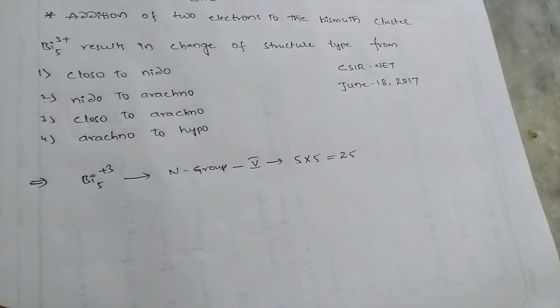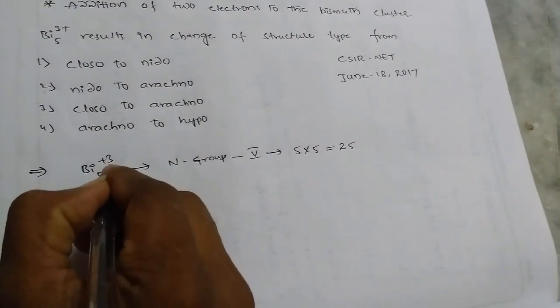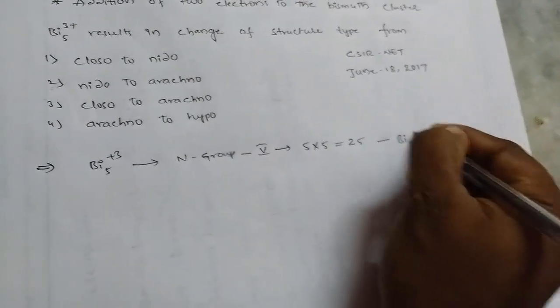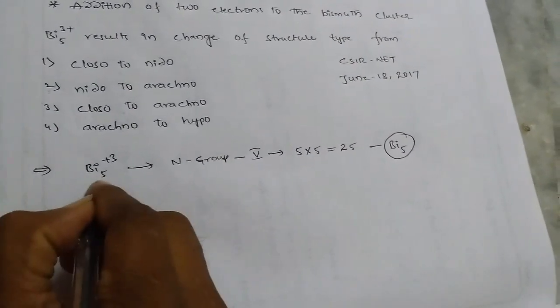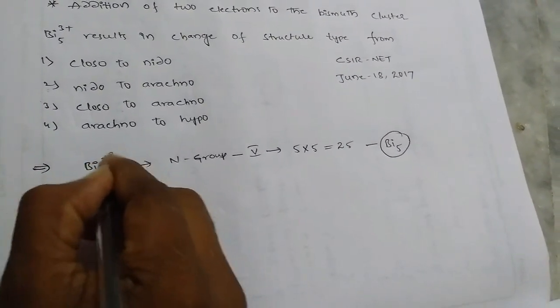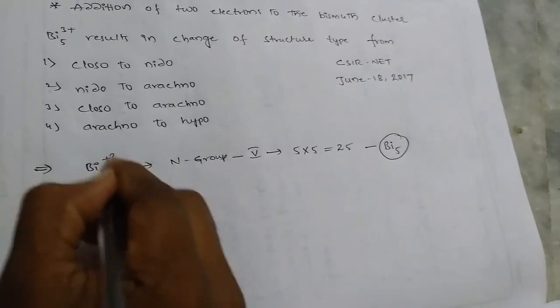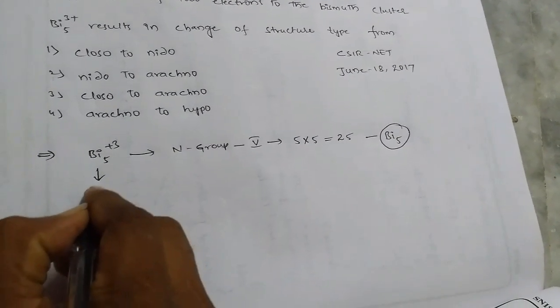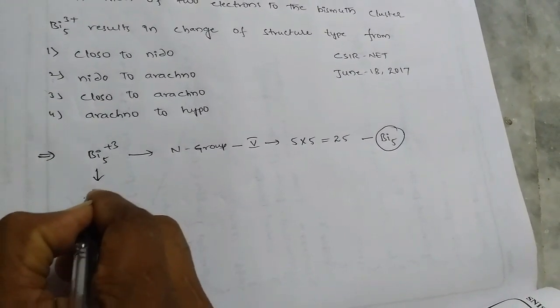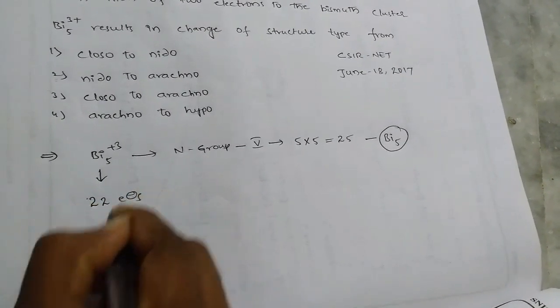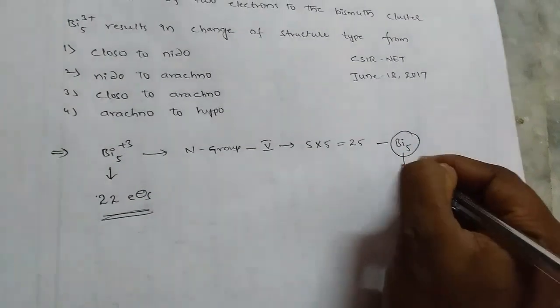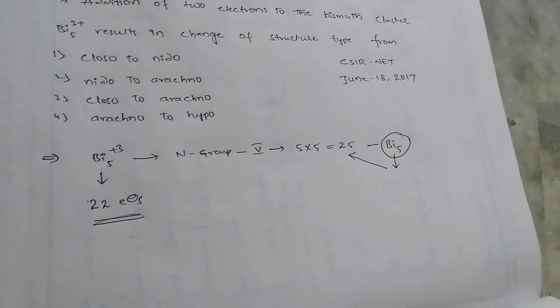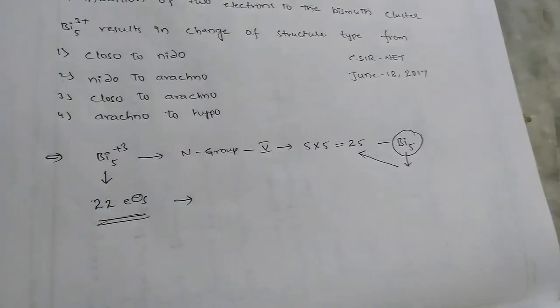But in our question, we have it with plus three charge. That means it loses three electrons. That means here we have only twenty-two electrons in this cluster. So if we have bismuth five, we have 25 electrons, but in this we have only 22 electrons.